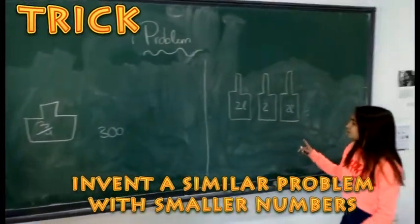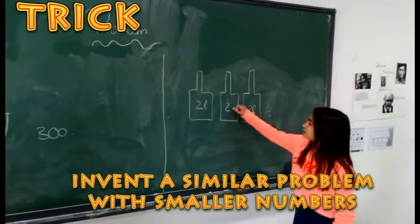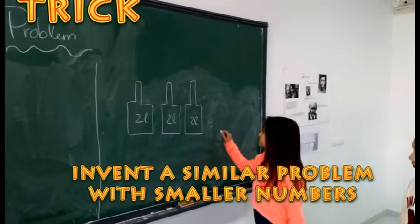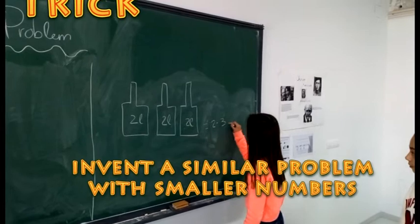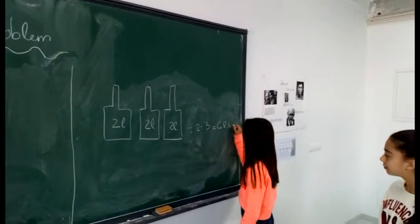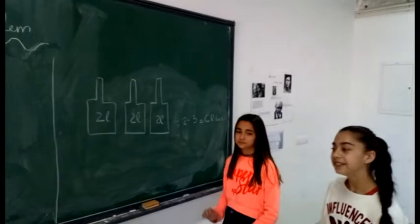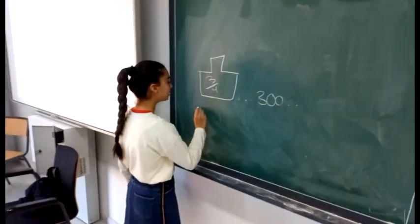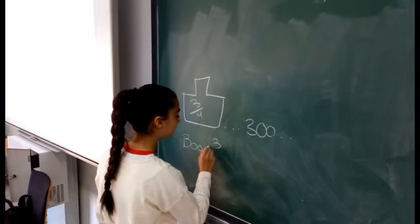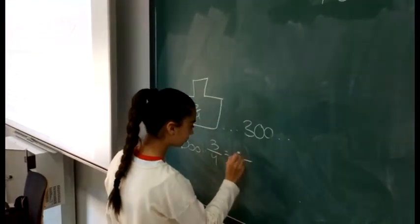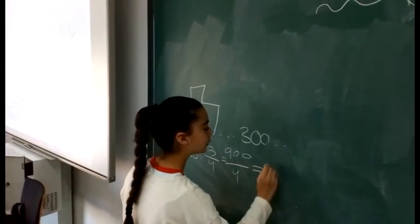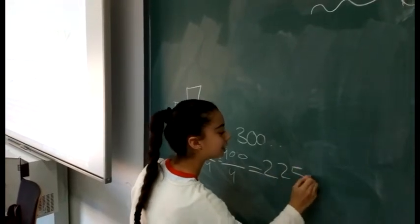If you have 3 bottles with 2 liters in each one, you multiply the bottles by the liters. I multiply the bottles by the liters. 225 liters. Thank you.